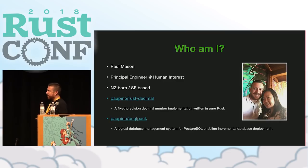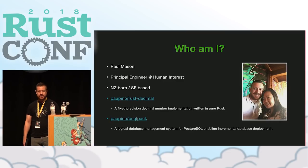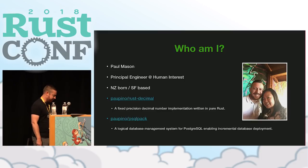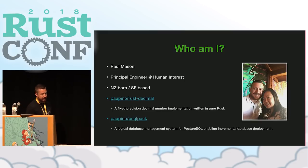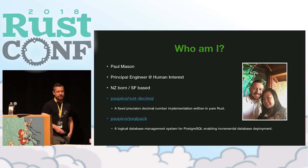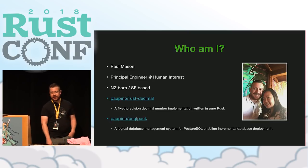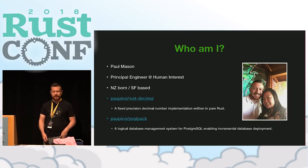I've been working on Rust for a number of years, and as a result had to create a number of libraries. One such library that I'll be talking about in a lot of these examples is the Rust Decimal Library, which is a fixed precision decimal number library written in Rust.